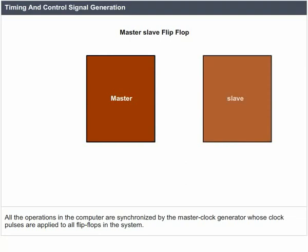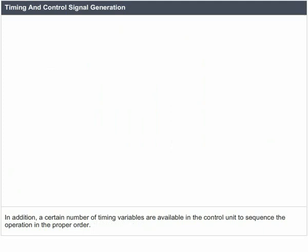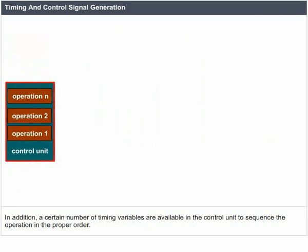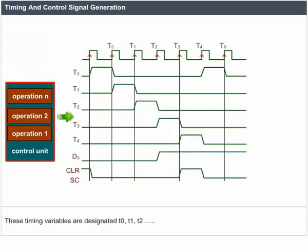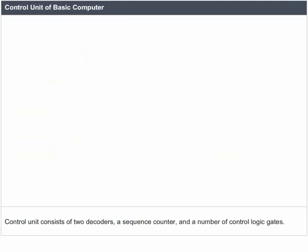All operations in the computer are synchronized by the master clock generator, whose clock pulses are applied to all flip-flops in the system. A certain number of timing variables are available in the control unit to sequence operations in the proper order. These timing variables are designated T0, T1, T2, and so on. The clock pulses occur once every microsecond (μs), and each timing variable is one μs long.